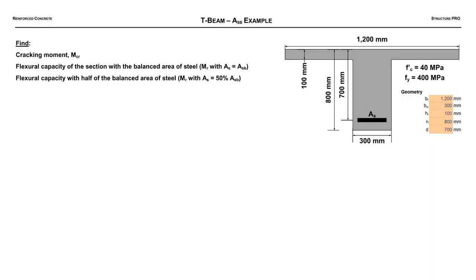Alright, check it out. T-beam example coming up here. In this example we're going to be talking about a cracking moment, we're going to be finding the flexural capacity of this T-beam when we have the balanced steel area, so the balanced moment you could say, and we're going to find the flexural capacity with half the balanced steel area. We're going to be using CSA A23.3, so that's the Canadian concrete code, and that is similar to or parallel to ACI 318, which is the American concrete building code.